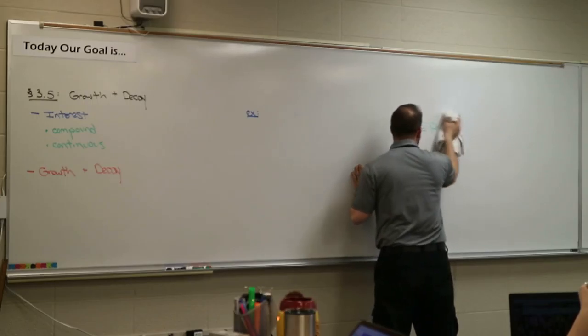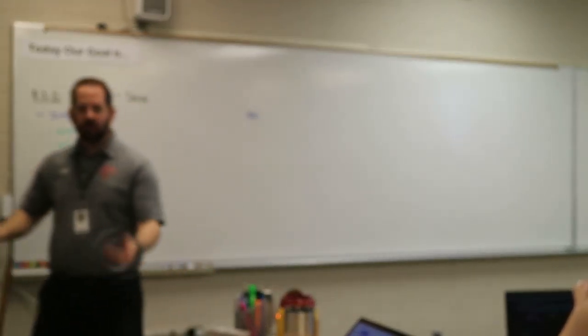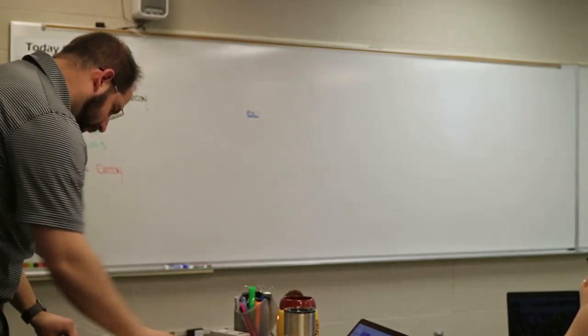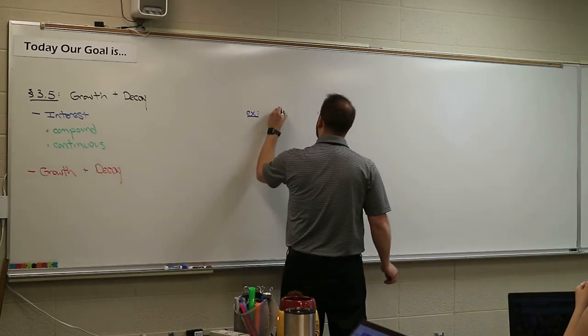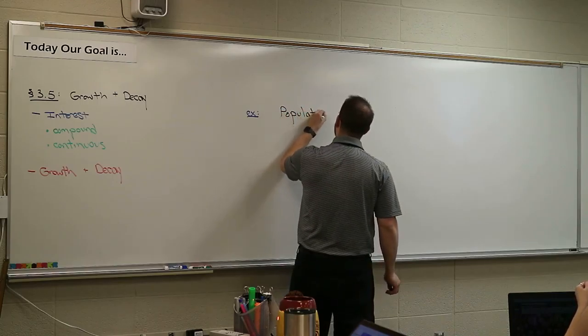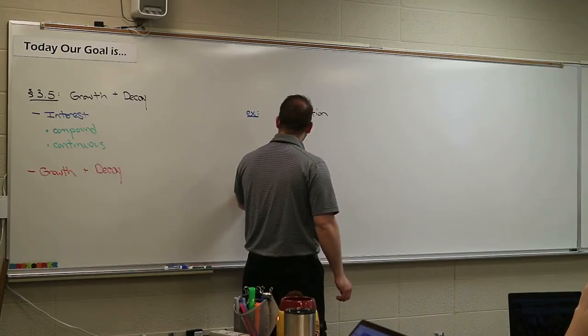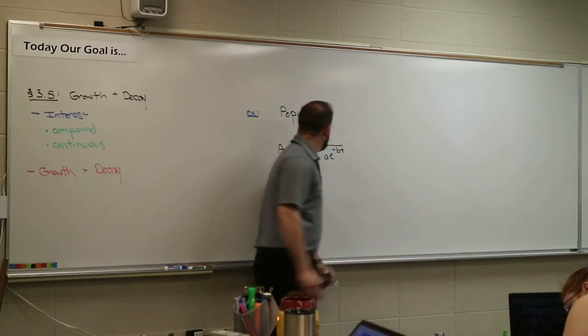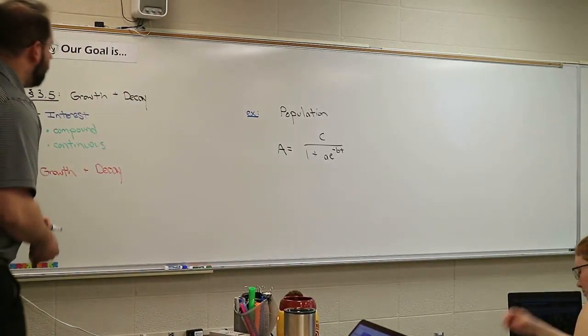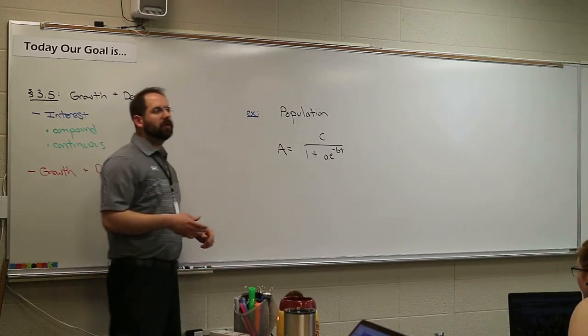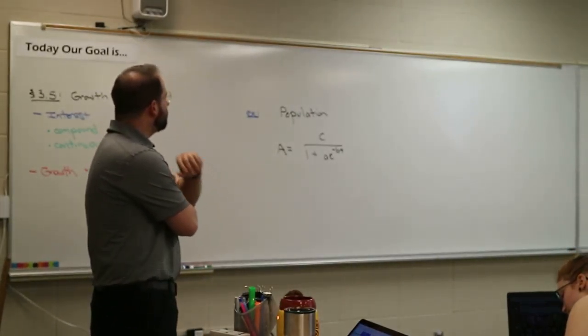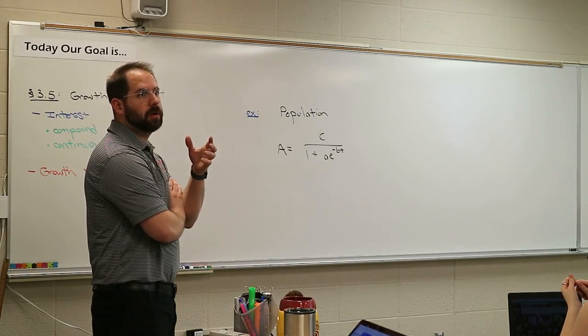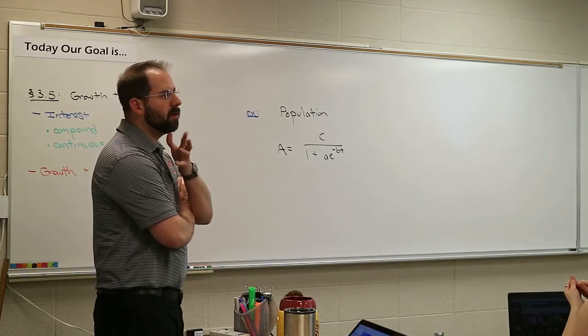This next formula is directly out of most research books. Here's the formula I'd like you to have. This is for population. This is a population density problem. A equals C over 1 plus little a e to the negative bt. This is the formula that you use for a population density problem where you're trying to figure out the infection rates of a population.